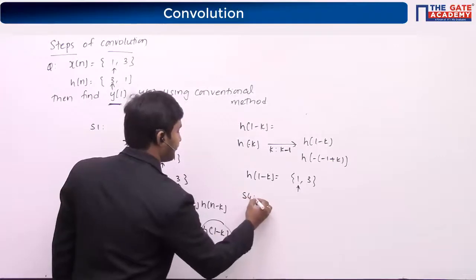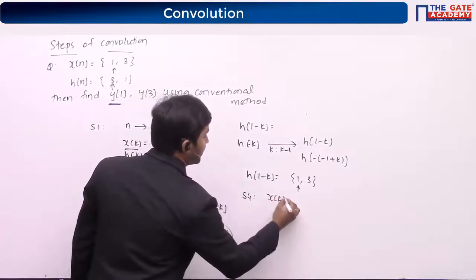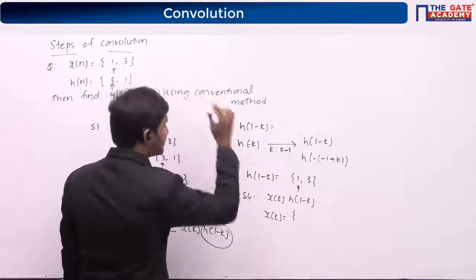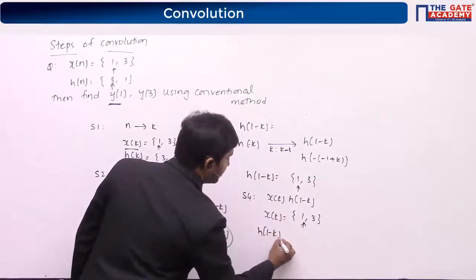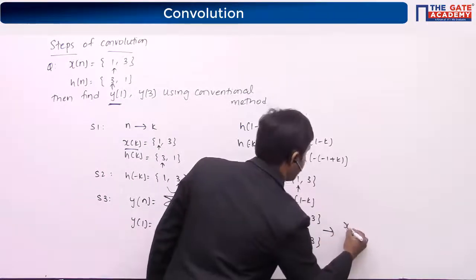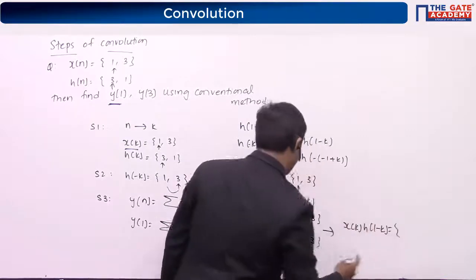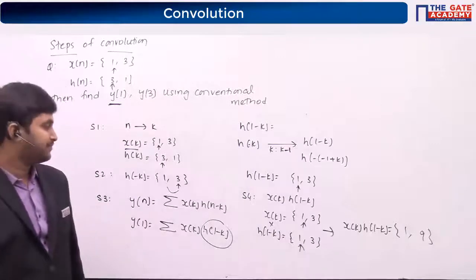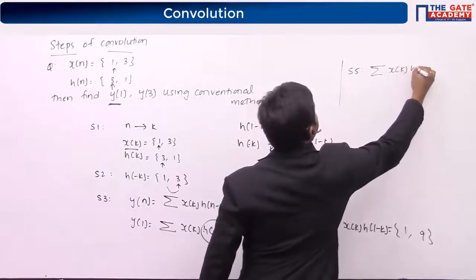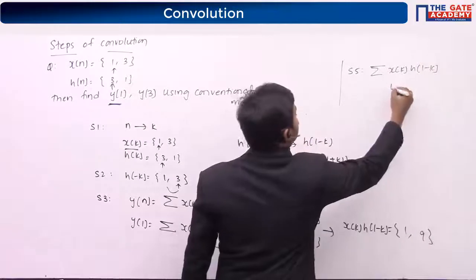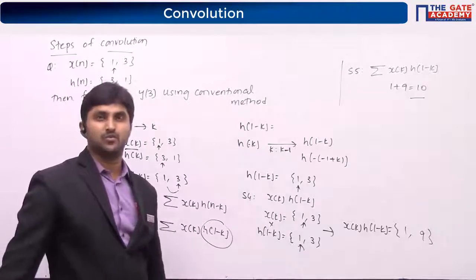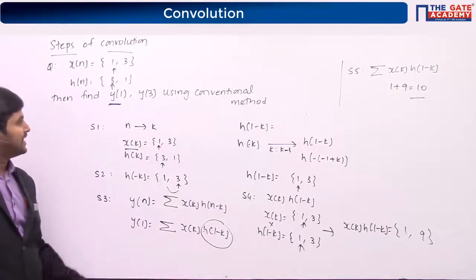Step 4: multiply x of k into h of 1 minus k. x of k is {1, 3} and h of 1 minus k is also {1, 3}. Multiplying both, the result is {1, 9}. The last step is summation of all the samples of x of k and h of 1 minus k: 1 plus 9 equals 10. So this is the value of y of 1.